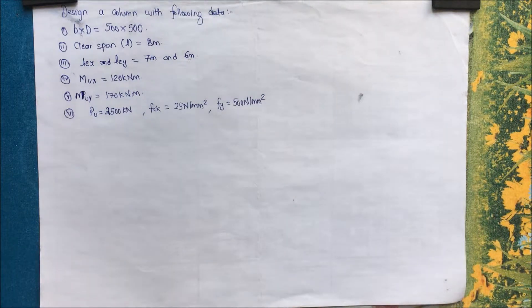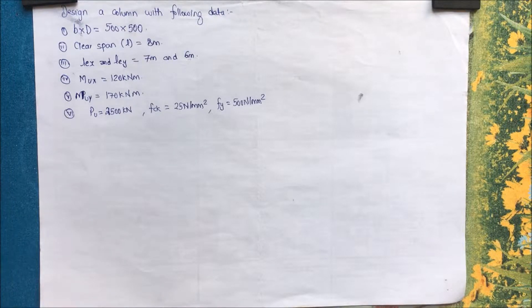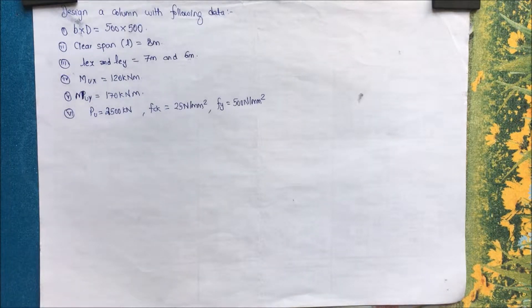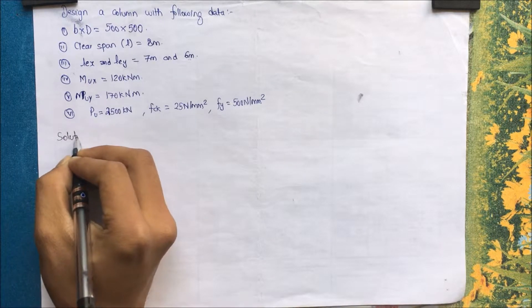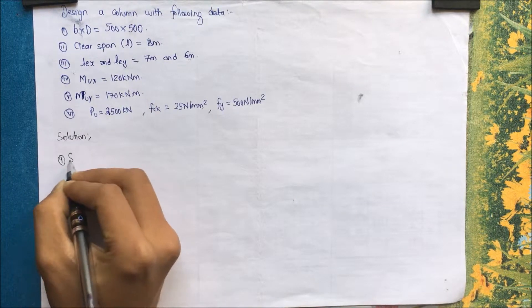Hello guys and welcome to another video in the RCC video series. In this video we'll be discussing a numerical related to long columns. We have a question: design a column with the following data — dimension b × d = 500 × 500 (square column), span l = 8 m, lex and ley = 6.7 m and 6 m respectively, moments along both axes = 120 and 170 kN·m, axial load Pu = 2500 kN, fck = 25 and fy = 500 N/mm².